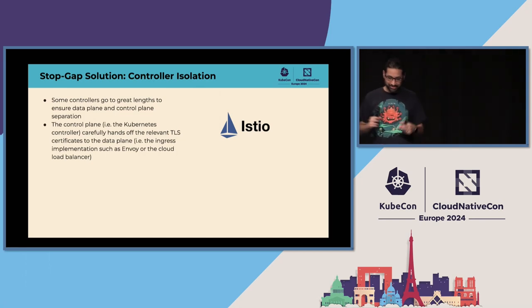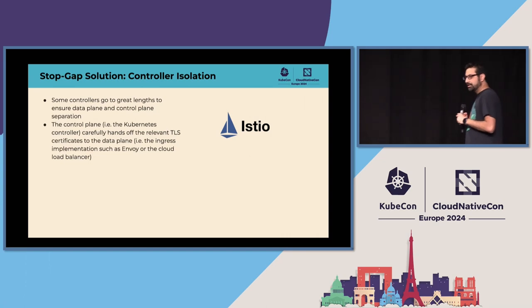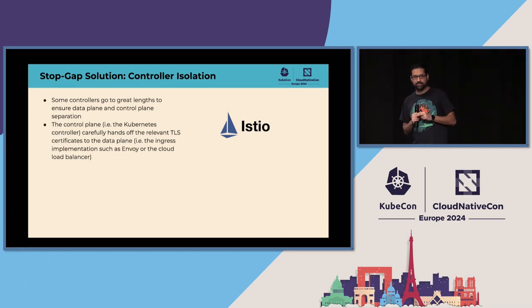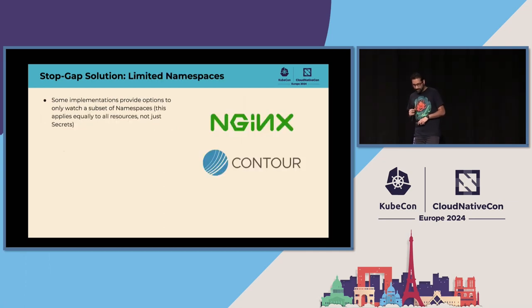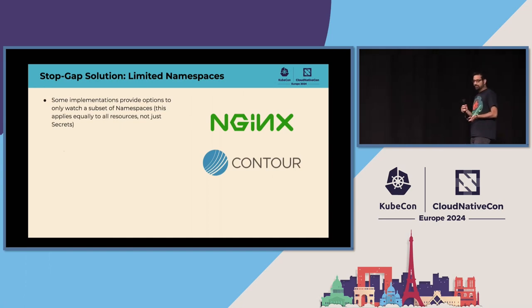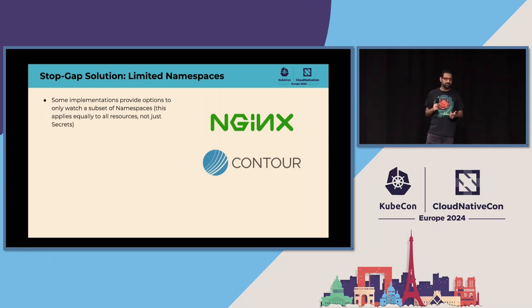What can you do today without all this fancy stuff? Ingress controllers like the Istio one take great care to separate their control plane — the Kubernetes controller — from their data plane, the actual networking stack. Pick an Ingress implementation that has that separation, so that even if you embed Lua config, it doesn't end up causing a CVE. You can also run multiple instances of your Ingress implementation in isolated namespaces and only grant them access to that specific namespace, limiting the blast radius when things go wrong.